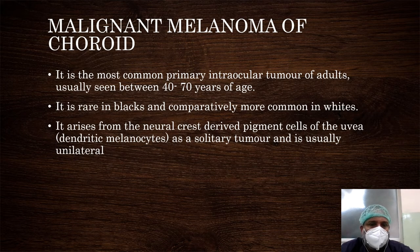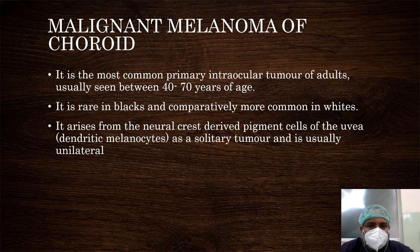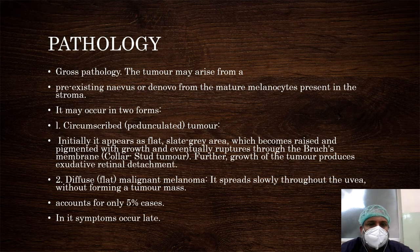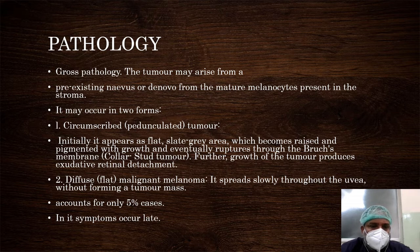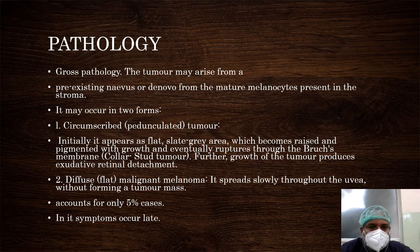Malignant melanoma of the choroid is the most common primary intraocular tumor of adults, usually seen between the age of 40 to 70 years, rare in blacks and more common in whites. It arises from neural crest-derived pigment cells of the uvea as a solid tumor and is usually unilateral. The tumor may arise from a pre-existing nevus or de novo from mature melanocytes in the stroma. It may occur in two forms: a pedunculated tumor or a diffuse tumor. Initially it appears as a flat, slate-gray lesion which becomes raised and pigmented. Growth eventually ruptures through Bruch's membrane — this is called a collar-stud tumor. Further growth produces exudative retinal detachment.